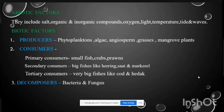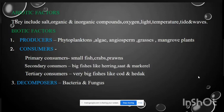Consumers consist of three types. Primary consumers include small fish, crabs, and prawns. Secondary consumers are big fish like herring, sharks, and mackerels. Tertiary consumers consist of very big fish like cod. Decomposers are generally bacteria and fungi.